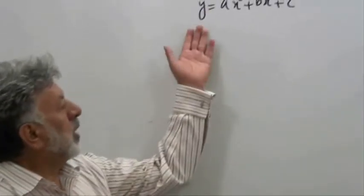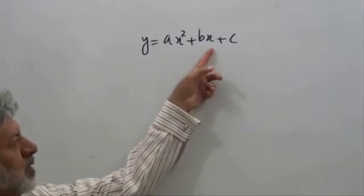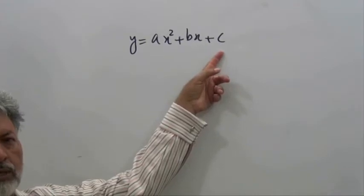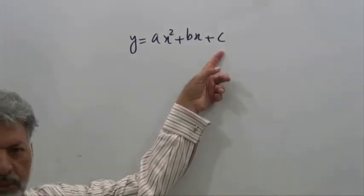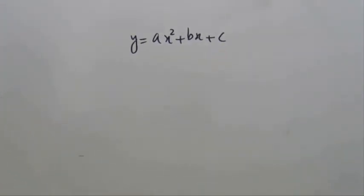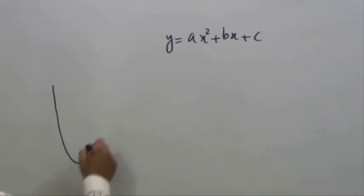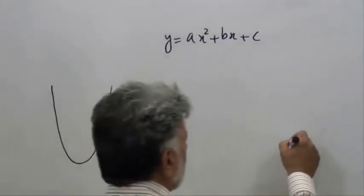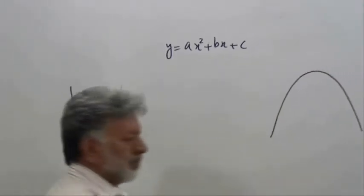Quadratic expression y equals ax squared plus bx plus c, when sketched, is in the form of a parabola. It may take this form or this form.